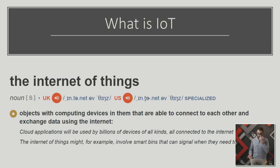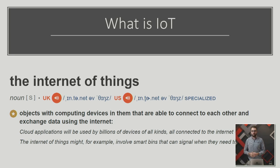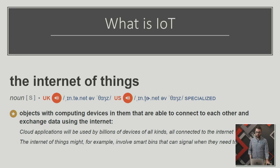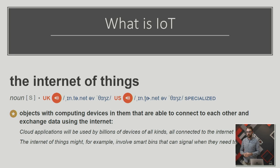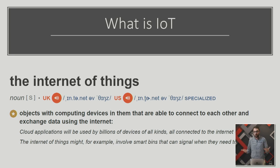So first up, what is IoT? IoT being the Internet of Things. If you look on the Urban Dictionary, it's the objects with computing devices in them that are able to connect to each other and exchange data using the internet. Everyone here has an IoT device - that's people's phones, effectively. And these days IoT devices are popping up everywhere. Chips are getting smaller, devices are getting smaller. You're going to have a smart fridge soon, your microwave could have an IoT device, your car - everything seems to be getting connected to the internet.